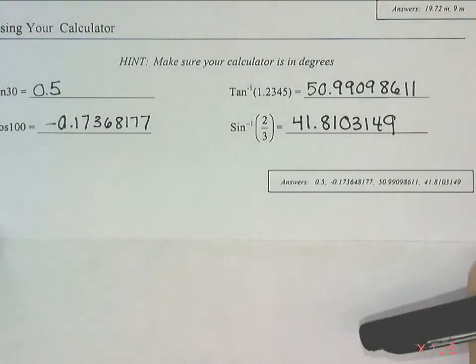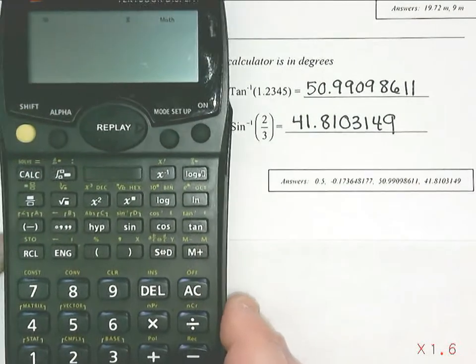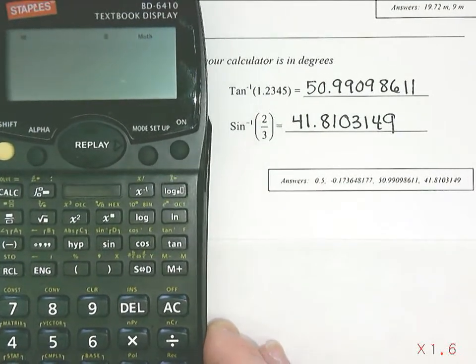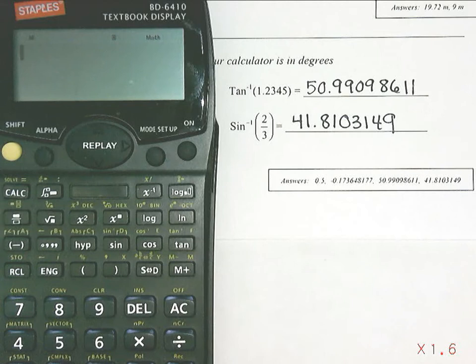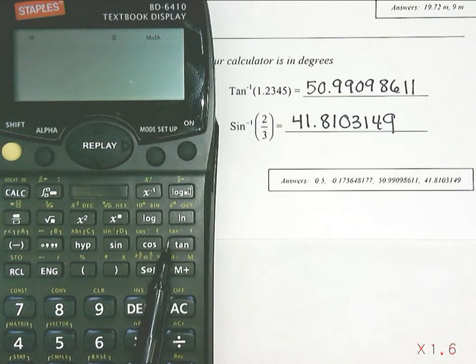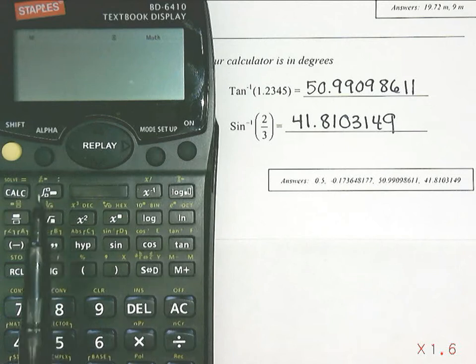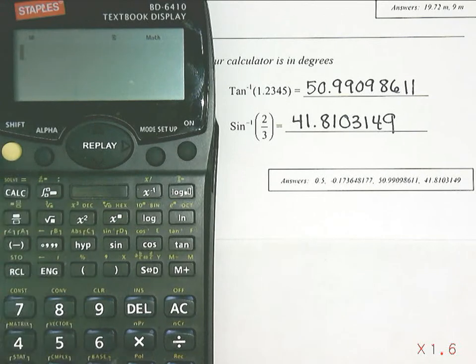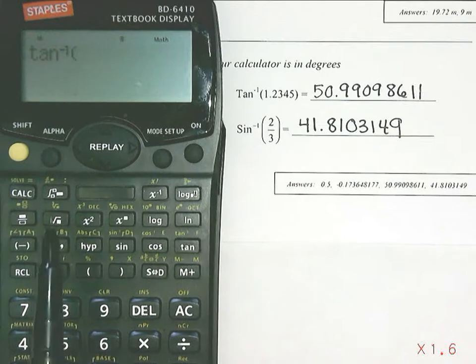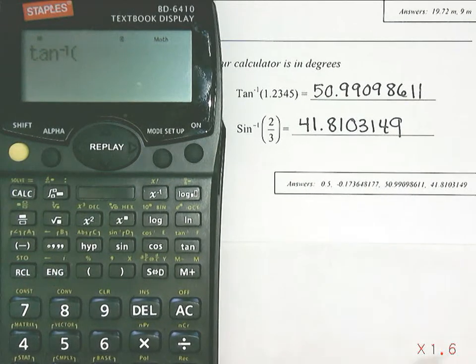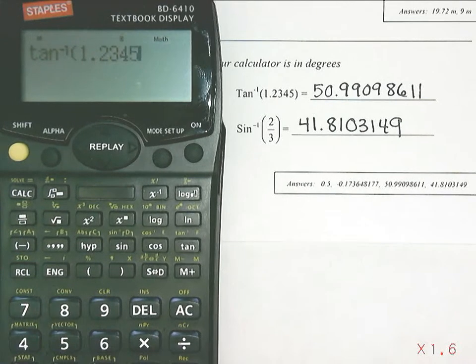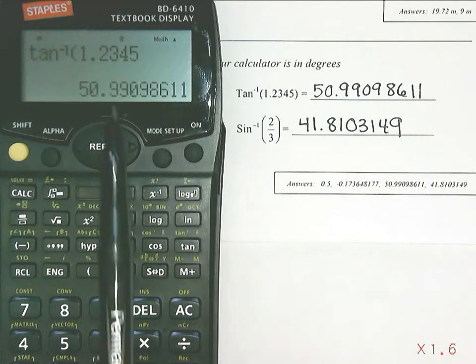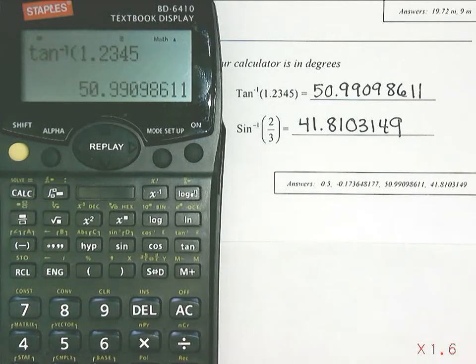To use the calculator where you do see what you type in on the screen, to do the inverse tan of 1.2345, I would first find my tan button. I see that the inverse tan is yellow, so I'm going to press the yellow button and then the tan to bring up the tan negative 1, and then I'm going to type in 1.2345. And you'll notice that I get the same answer as I did with the other calculator.